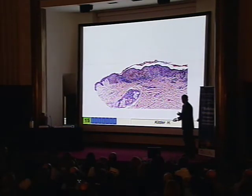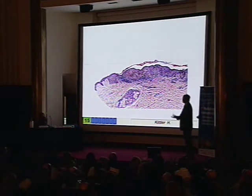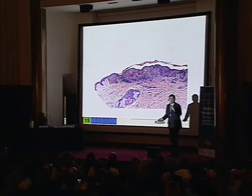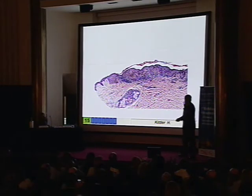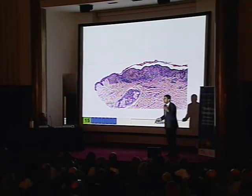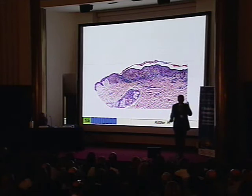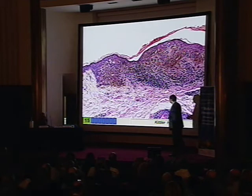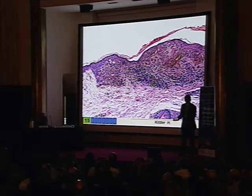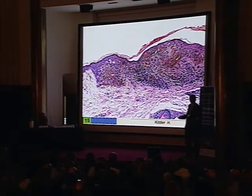This is a melanoma in situ. There is no pre-existing nevus. It started de novo, like most melanomas. And to be quite sure, there is no dysplastic nevus ever on the face. Lentigo maligna almost always starts de novo and not in a pre-existing lesion of any kind.